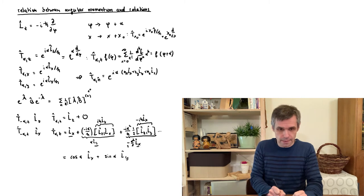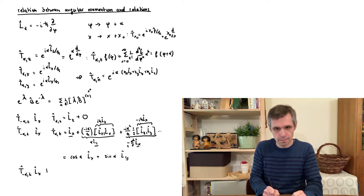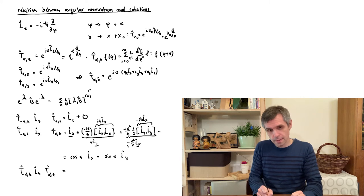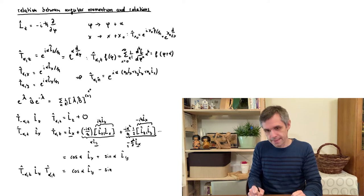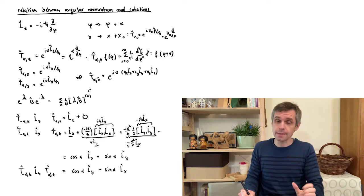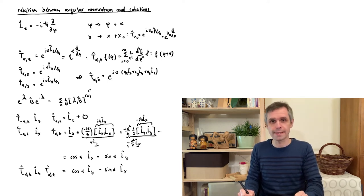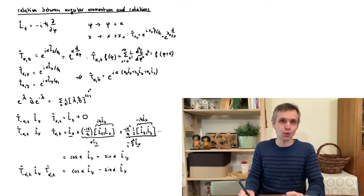We can carry out exactly the same calculation for the Ly component, with the only difference being some minus signs. What we obtain there is cosine(α)·Ly − sine(α)·Lx. This is exactly the form of a rotation about the z-axis as we know it from classical geometry. So this worked out very nicely on the algebraic level.